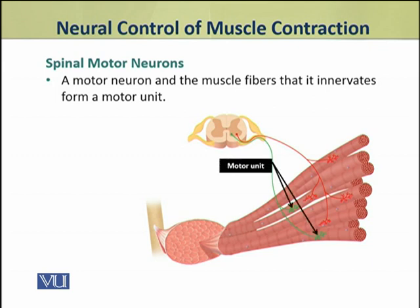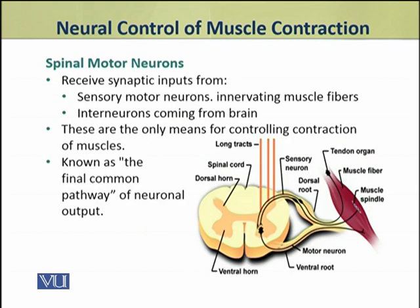Together, a motor neuron and all the muscle fibers it innervates form a motor unit. Spinal motor neurons receive inputs in two ways.